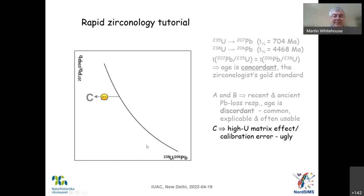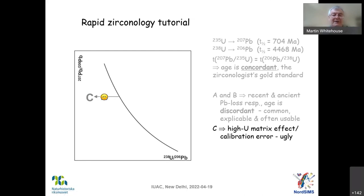Another big problem in SIMS analysis: if we have high uranium matrices — say over 2,000 to 3,000 ppm uranium — bad relief on mounts, big canyons around grains, poorly made samples, or if you burn your zircon with the electron beam making CL images before taking it to the SIMS — that is a big no-no. You'll get beautiful CL images, but you'll ruin your SIMS analyses. What this does is change the calibration of lead-uranium, moving the zircon toward reverse discordance. The only thing we can do is accept that the 207/206 lead age is probably correct, but the lead-uranium age is inaccurate.